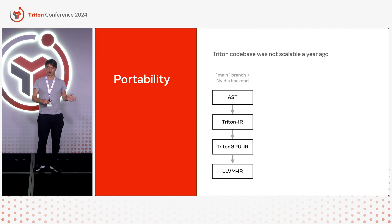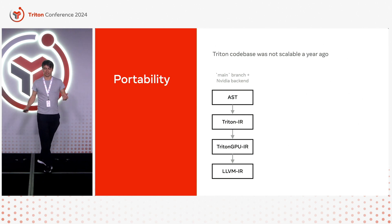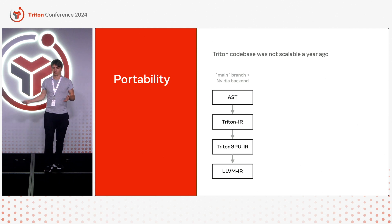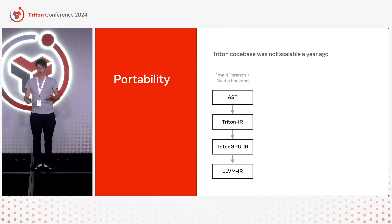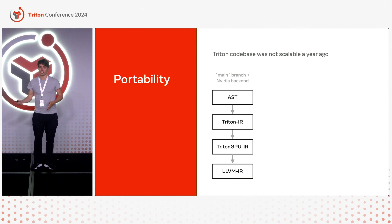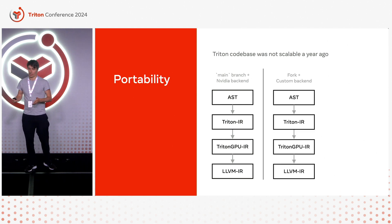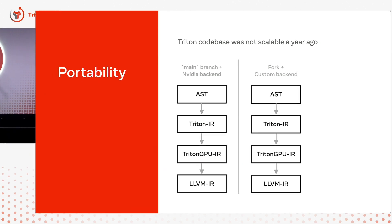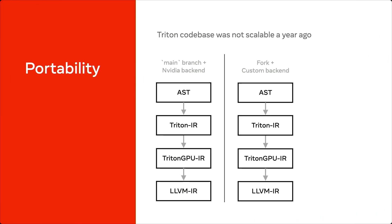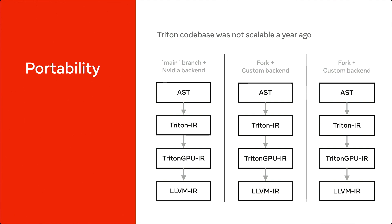If you look at the state of things, how things were last year, you had this nice code generation flow that Haishan talked about this morning. But if you had your own backend — because this only worked for NVIDIA — you had to fork it and replicate the entire thing, modifying the pieces you care about. And you had to do this for every single backend you wanted to develop. So this wasn't exactly great and scalable.